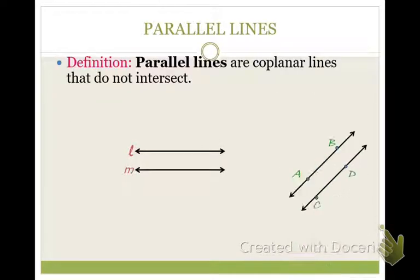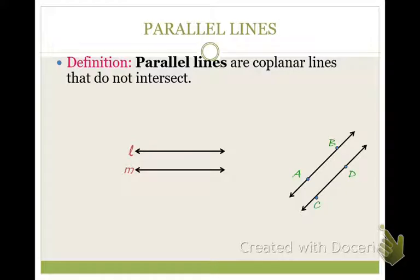Parallel lines — we'll start there. Parallel lines are coplanar lines that do not intersect. Write that down where it says parallel lines. What does coplanar mean? On the same plane. So these are lines on the same plane that don't intersect.